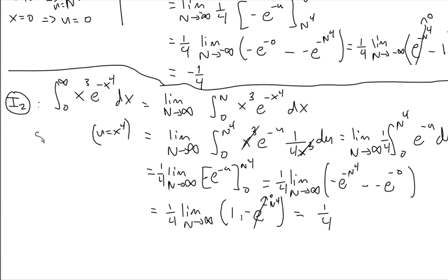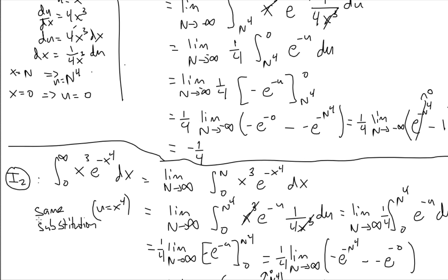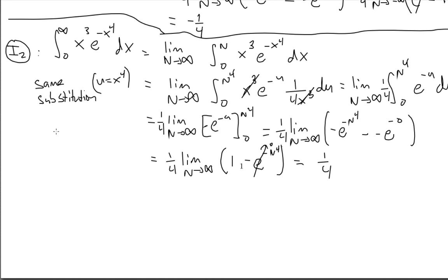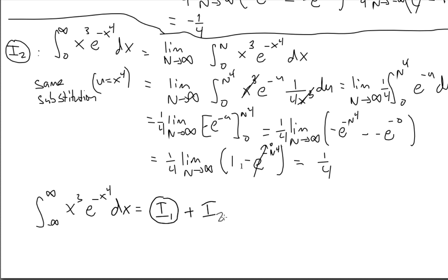So now we have integral one equal to negative one quarter and integral two equal to positive one quarter. Our original question was the integral from negative infinity to infinity of x cubed e to the negative x to the power of 4 dx, which equals integral one plus integral two, which is negative one quarter plus one quarter. Adding these together, the final answer is zero.